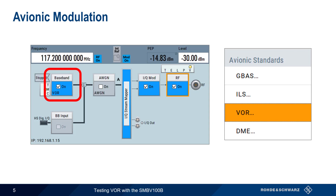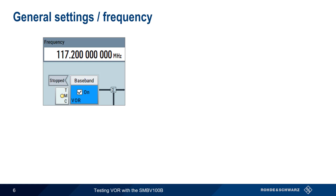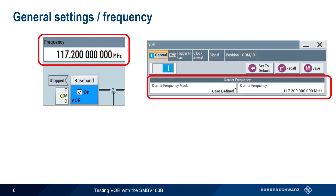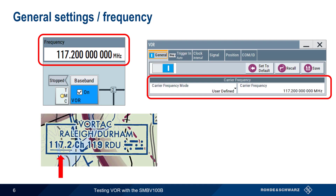Don't forget to enable both the modulation and the RF blocks. The frequency of the generated signal can be specified either directly in the main SMBV GUI or under the General tab in VOR configuration. In addition to specifying frequency as a user-defined value in megahertz, the VOR transmit frequency can also be specified using standard ICAO channel numbers — for example, ICAO channel 119, which corresponds to the VOR frequency of 117.2 megahertz.